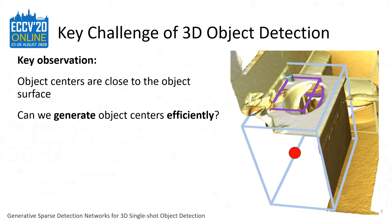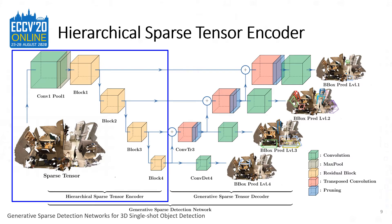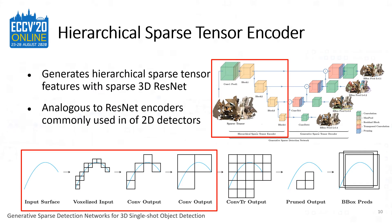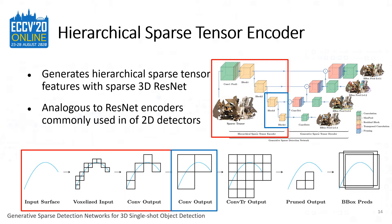Our key observation and main motivation of this paper is that the object centers are close to the object's surface. We propose a novel method to efficiently generate object center coordinates from the surface points. First, a hierarchical sparse sensor encoder encodes the input 3D scan into a pyramid of features consumed by the decoder, using sparse 3D residual networks, analogous to the ResNet encoder commonly used in 2D object detection. The collected point cloud is voxelized into a sparse tensor and goes through a sequence of residual blocks, where every layer of features is later consumed by the decoder to make object detection predictions.